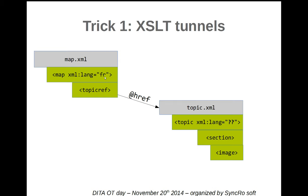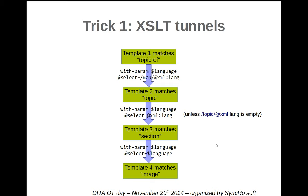When the language is not declared on the topic, we should be able to access the value from the map. We would use a parameter in that case, because when we are processing the topic, we don't know which map we come from. So the parameter should be passed during the processing. Here is how it would be done without tunnels — for example if you are bound to use XSLT 1.0, or if you don't know about tunnels. Basically, each green rectangle is a template for an element.